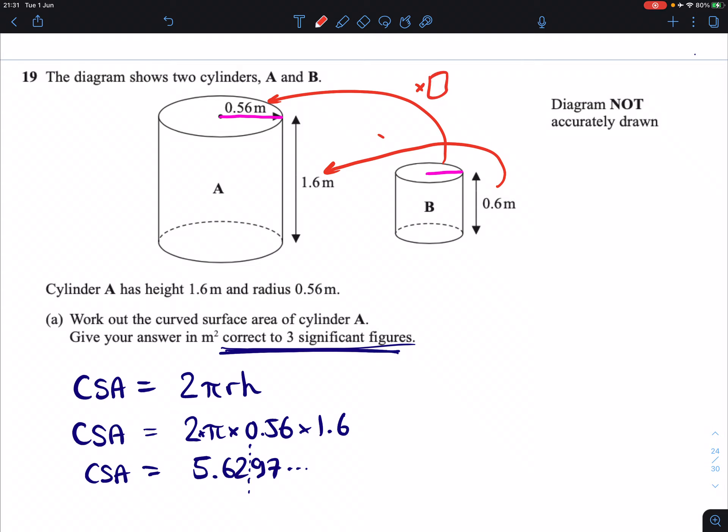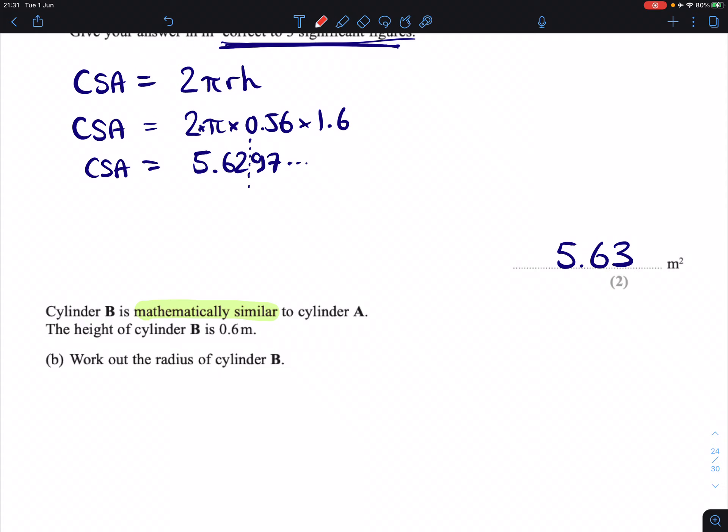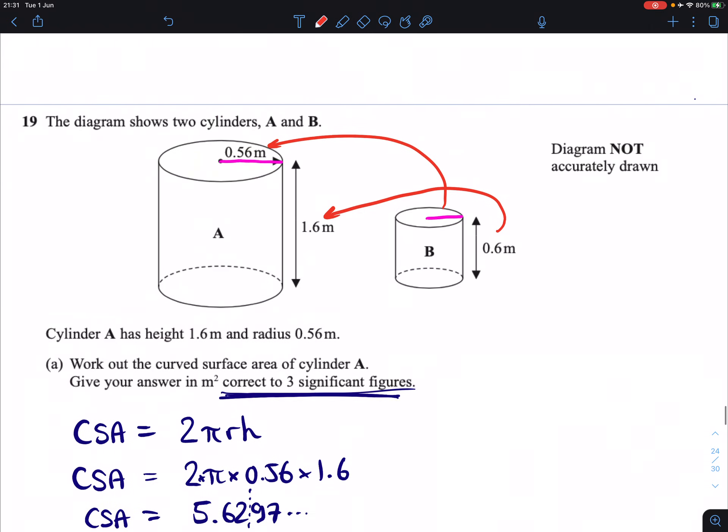So, whatever you multiply by comparing the radii, you're going to have the same thing comparing the height as your scale factor. What are we asked for? We're asked for the radius of cylinder B, and as per the picture, we're given the height of 0.6.